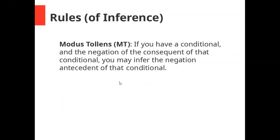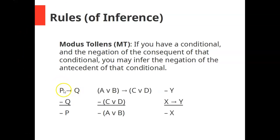Our second rule of inference is modus tollens, which says if you have a conditional and the negation of the consequent of that conditional, you may infer the negation of the antecedent. For example, if you have if P then Q and you know not Q, you're allowed to infer not P. Similarly, if Josh is from Chicago then he's from Illinois — if you find out he's not from Illinois, you infer he's not from Chicago. And just like modus ponens, the order of sentences doesn't matter.